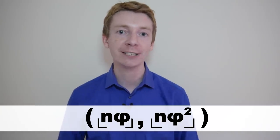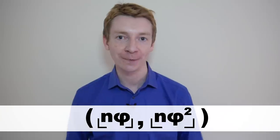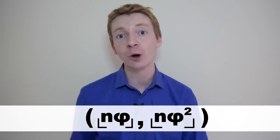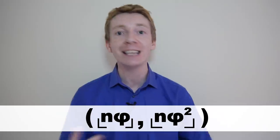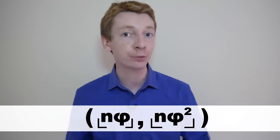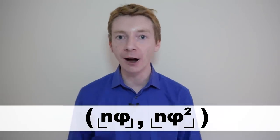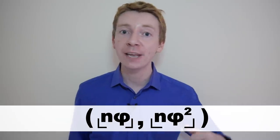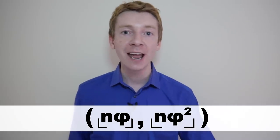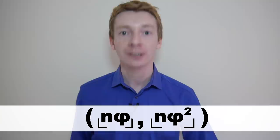What Witthoff showed was that the golden ratio was the only number you could use in this way that had the desired properties. Those properties are that each number appears once and once only, and the difference in the coordinates is n.